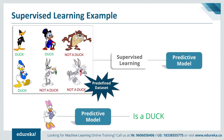You might be wondering why this category of machine learning is called supervised learning. It is called supervised learning because the process of an algorithm learning from the training data set can be thought of as a teacher supervising the learning process. We know the correct answers; the algorithm iteratively makes predictions on the training data and is corrected by the teacher. The learning stops when the algorithm achieves an acceptable level of performance.